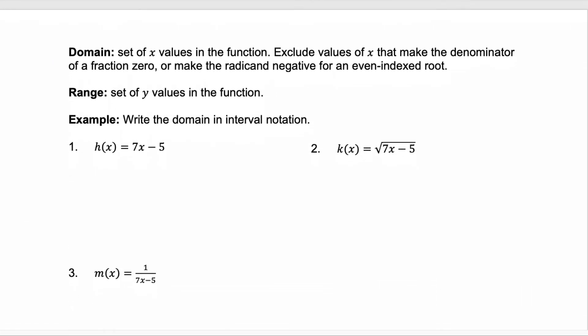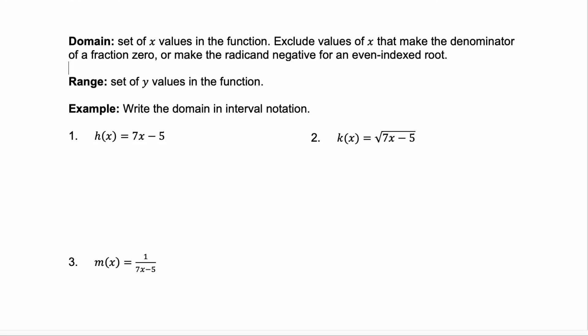Now let's talk about how to find domain and range. The domain is the set of x values in the function — we want to exclude values of x that make the denominator of a fraction 0 or make the radicand negative for an even index root. The range is the set of y values for the function. So domain is x and range is y.